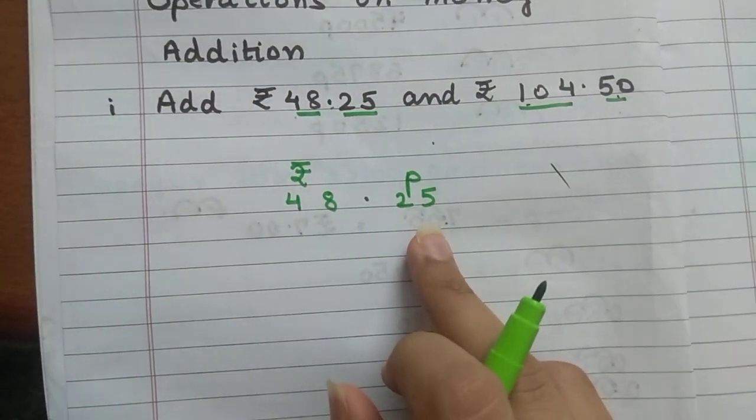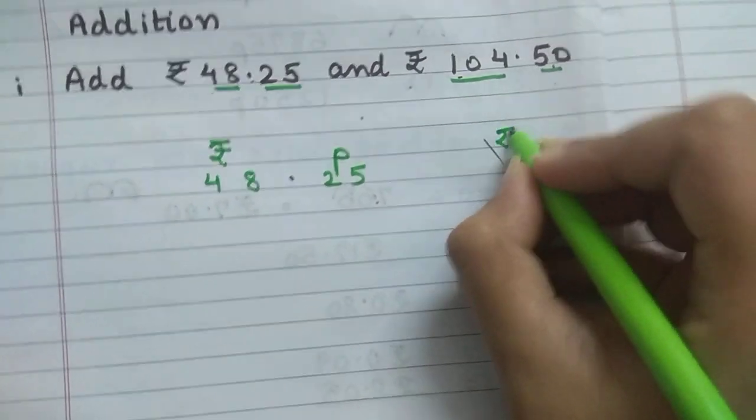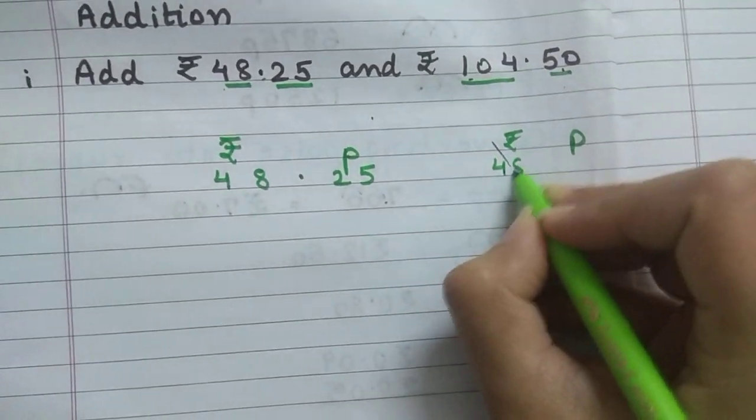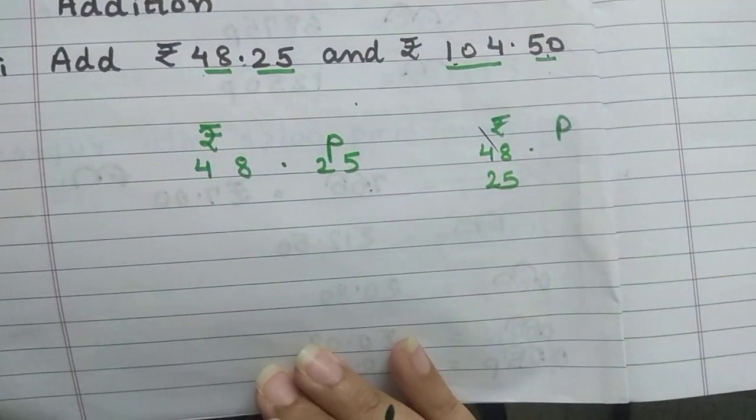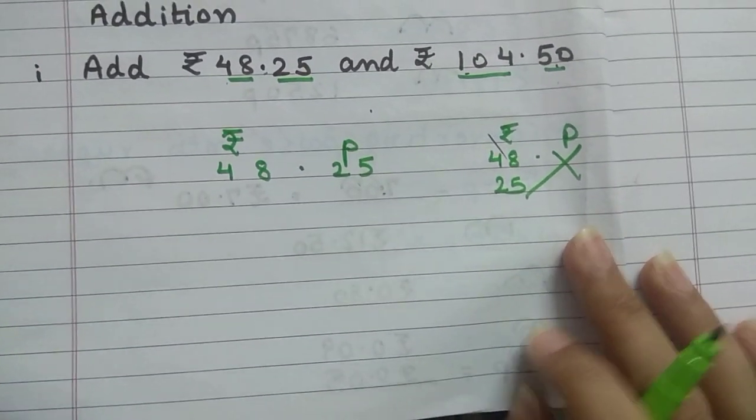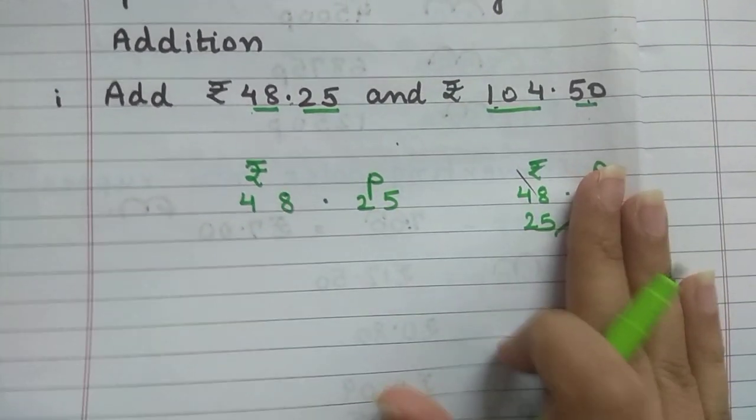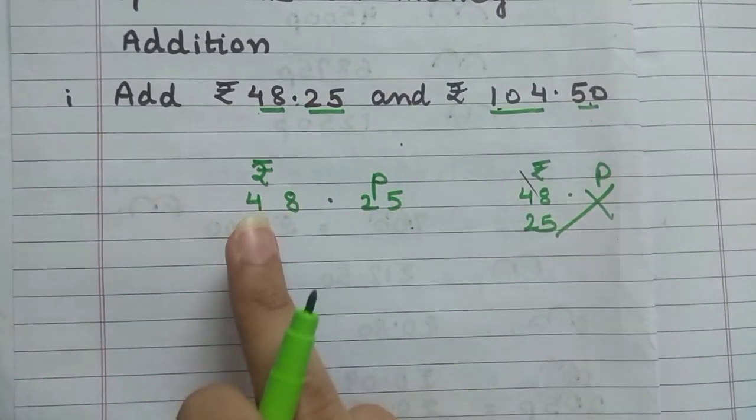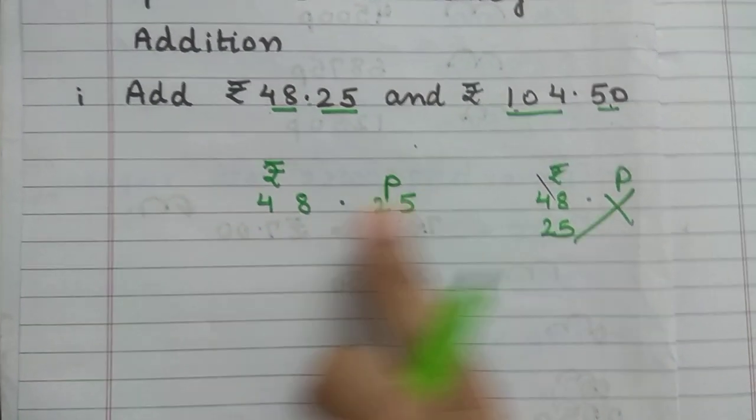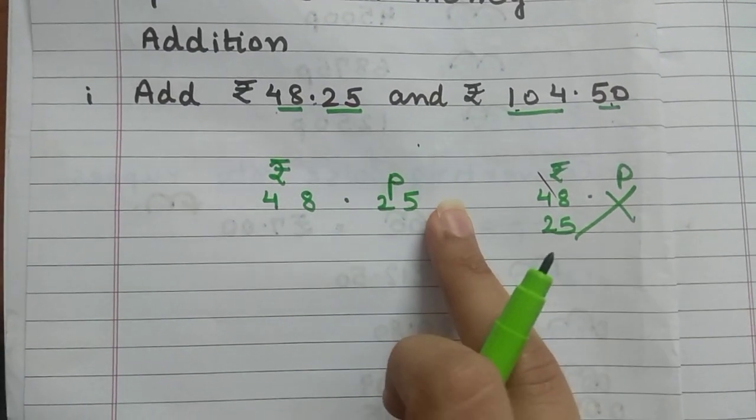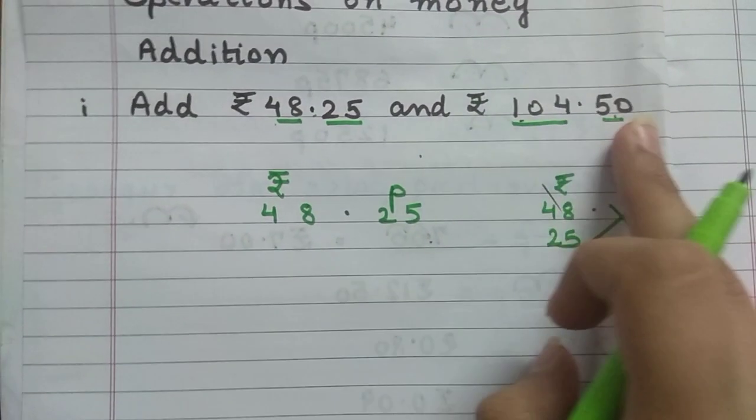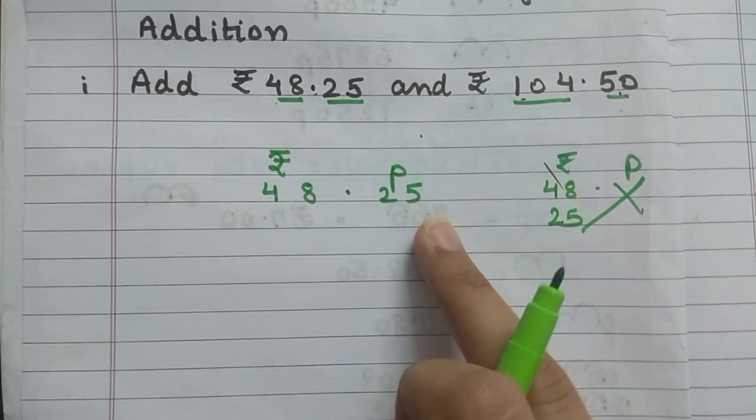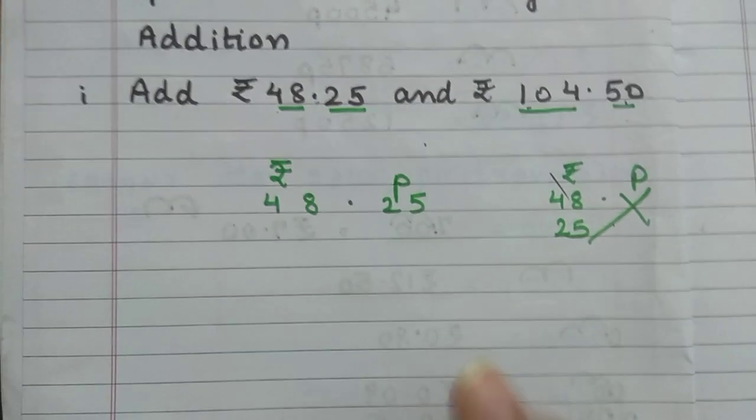Now what mistakes children make? They will write down rupees, paisa. Now 48 and 25, 48 dot 25. This is absolutely wrong. Don't ever write like this. This is completely wrong. Your sum will become wrong. This is one amount, 48 rupees and 25 paisa. This will be together.